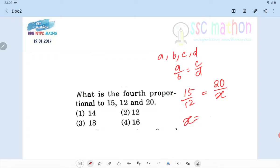4th proportion that is X equals to 20 into 12 divided by 15, that is equals to 5 3s are 15, 5 4s are 20, 3 4s are 12, cha cha sola.